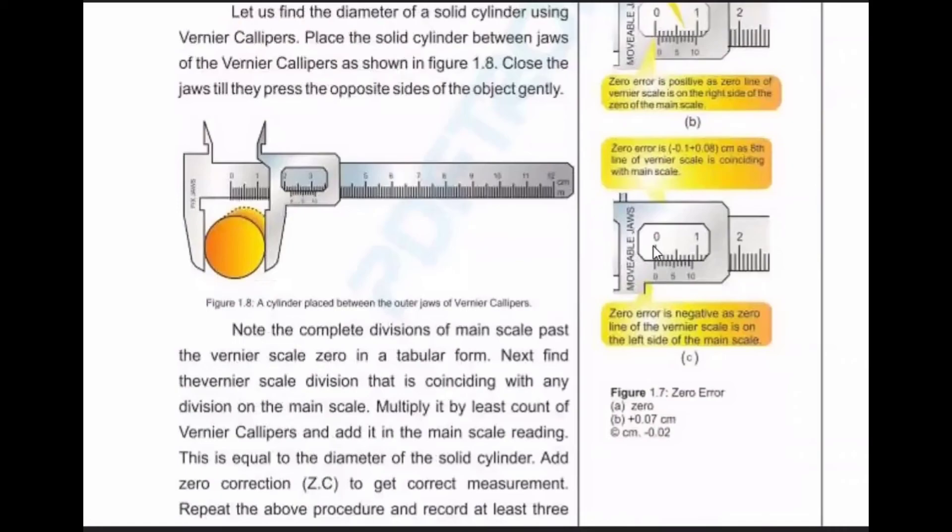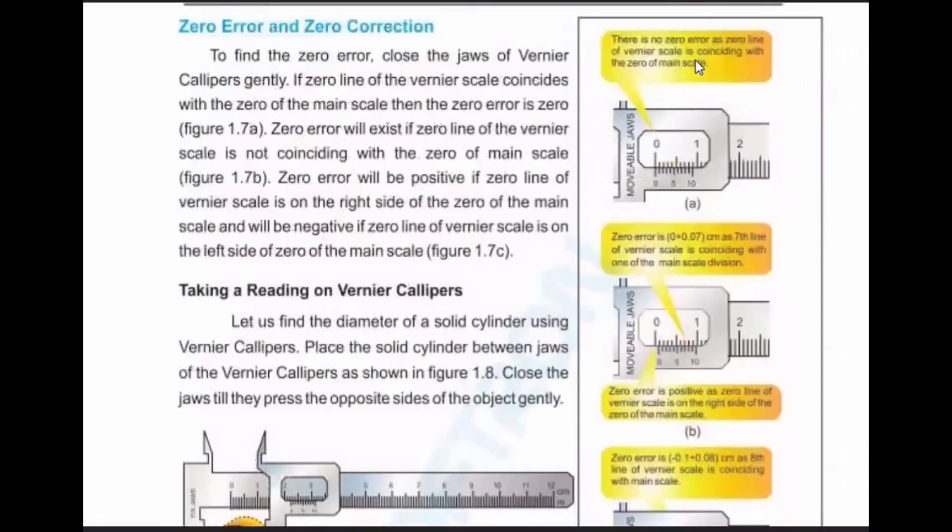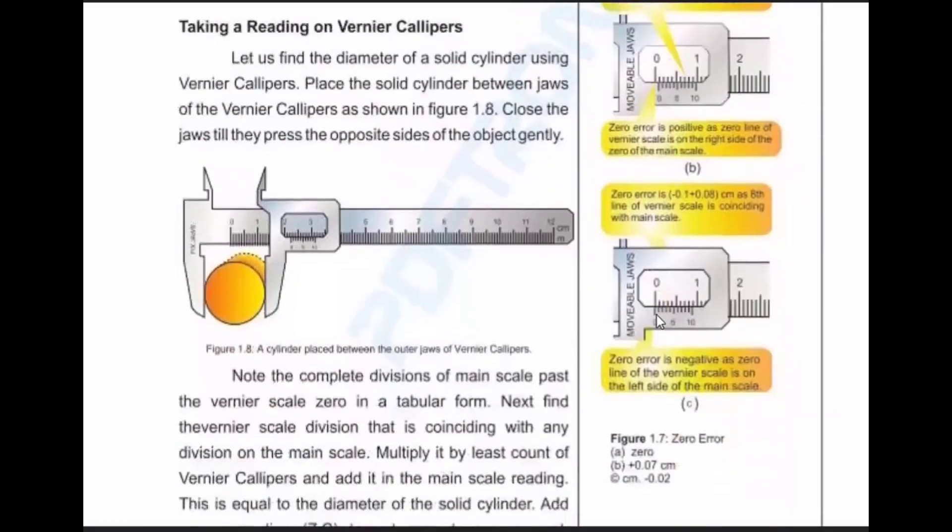This is when there is no error - the zero line touches zero. Here, zero is slightly behind, so this is called positive. And here, zero has moved slightly ahead, so this is called negative.